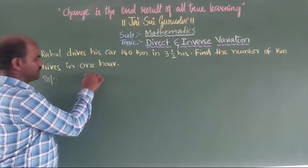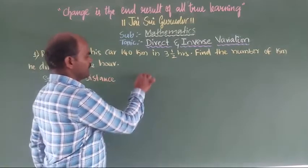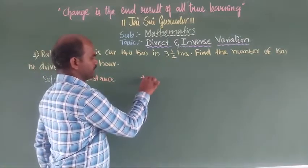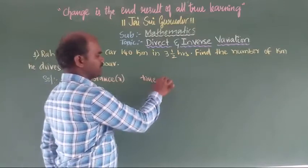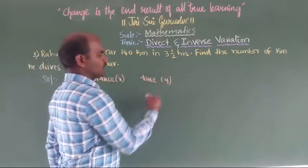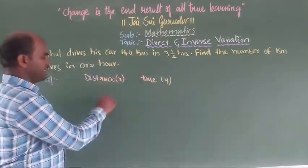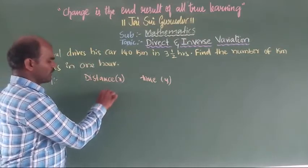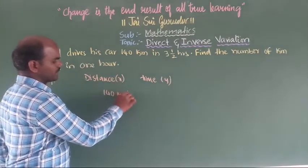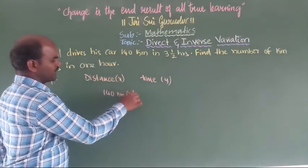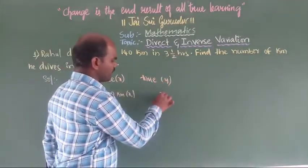For the solution, I am taking distance as x and time as y. The first distance is 140 kilometers, so x1 is 140. And time is how much for the first case? 3.5 hours, so y1 is 3.5 hours.